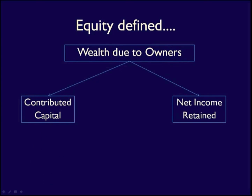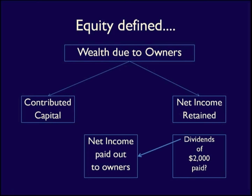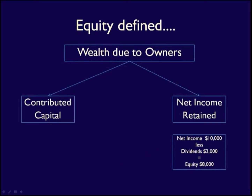Second, equity is the earnings that the business generates and keeps in the business. For instance, if the business has net income of $10,000 during the year, then equity would go up by $10,000. If a portion of that net income was paid out to the owners in the form of dividends, then equity would go up by the amount of net income less the amount of dividends. Dividends are the profit which a business chooses to pay out to the owners. For example, if a business had net income of $10,000 but paid out dividends of $2,000, then equity would increase by $8,000 — the earnings that the business has kept. This is called retained earnings, meaning the profit or earnings kept or retained in the business.